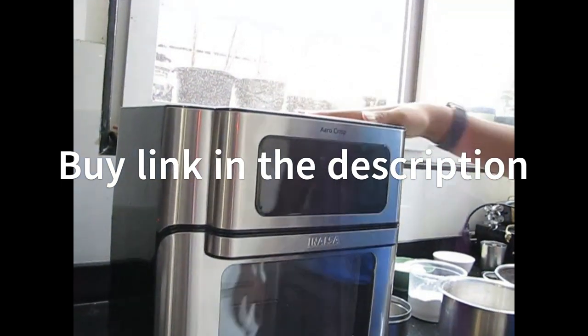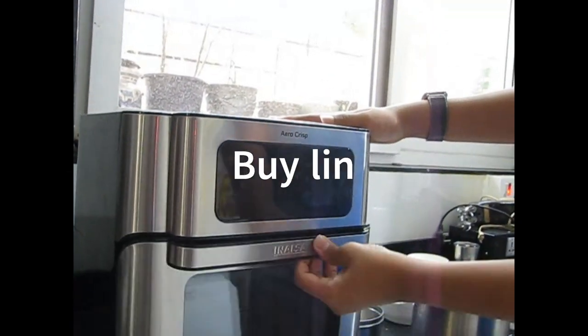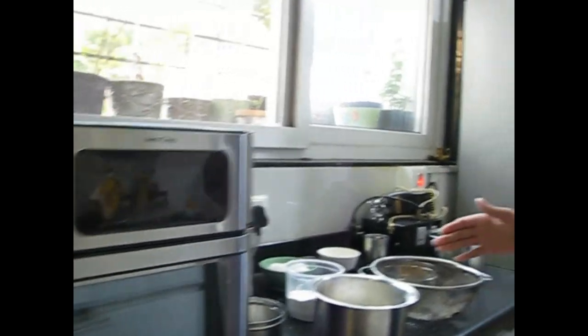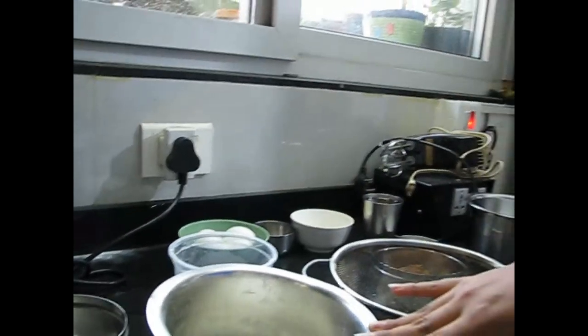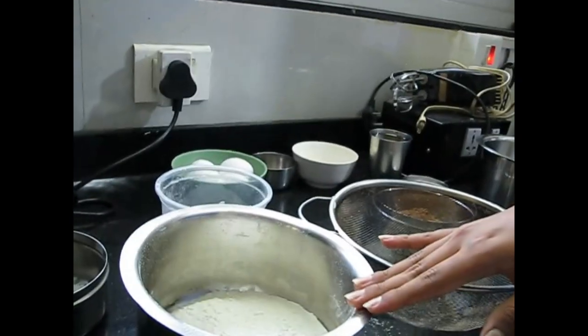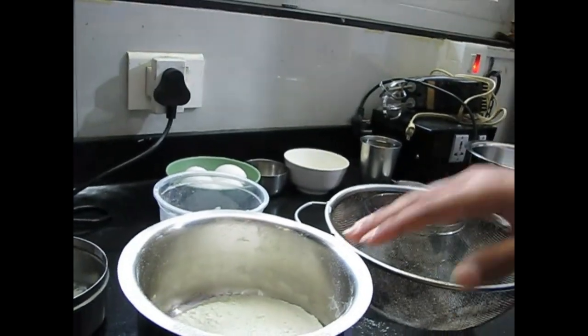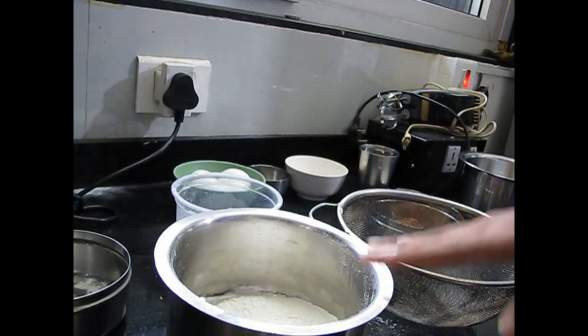So today we will be making a cake in this. Here are the ingredients which you will need. You will need all-purpose flour, that's maida, about 200 grams. You can use more or less according to your size of oven.